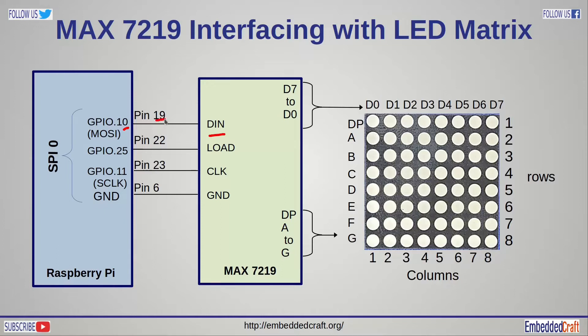MOSI is pin 19. Clock pin of Max 7219 is connected to SCLK of Raspberry Pi. Load pin of Max 7219 is connected to GPIO number 25. Load pin can be connected to any GPIO pin of Raspberry Pi. We will see role of load pin shortly.